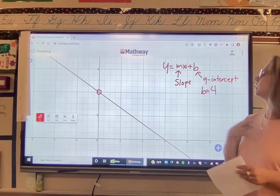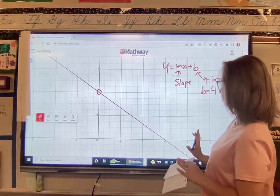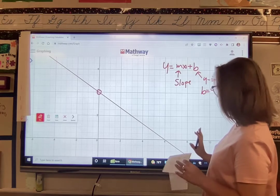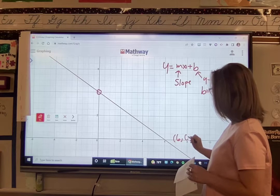Now to find the slope. The easiest way for me to do it is to do rise over run. So I'm going to find somewhere else on the graph where we have a point right here. This is 6, 0.